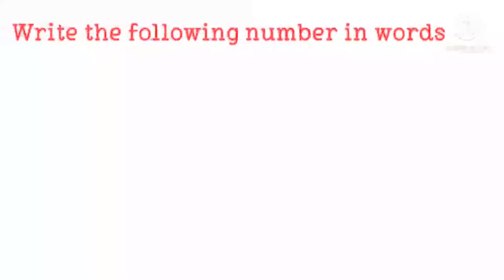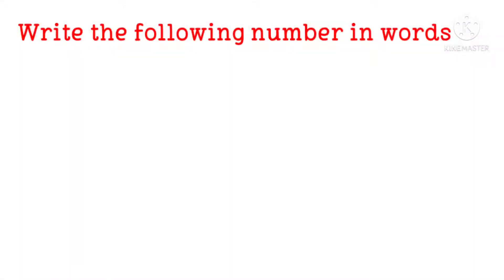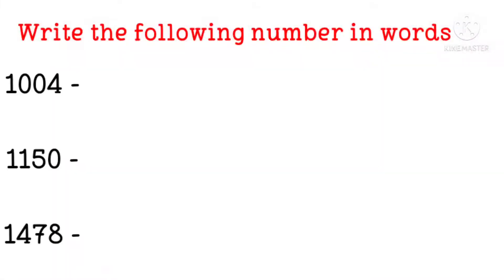So now we use these spellings and we can write the number names from one thousand to ten thousand. Next, write the following numbers in words. They have given some numbers and we can write the spellings of these numbers.